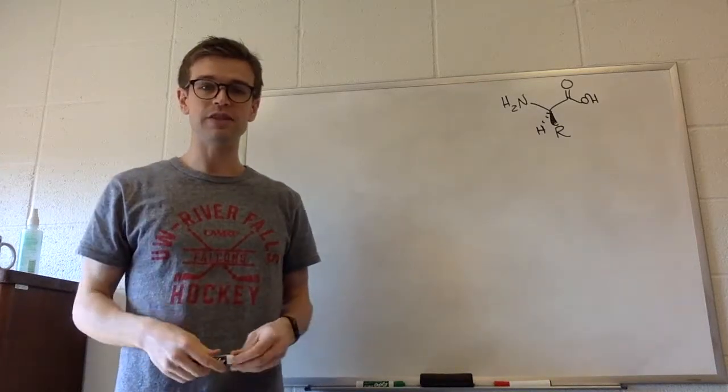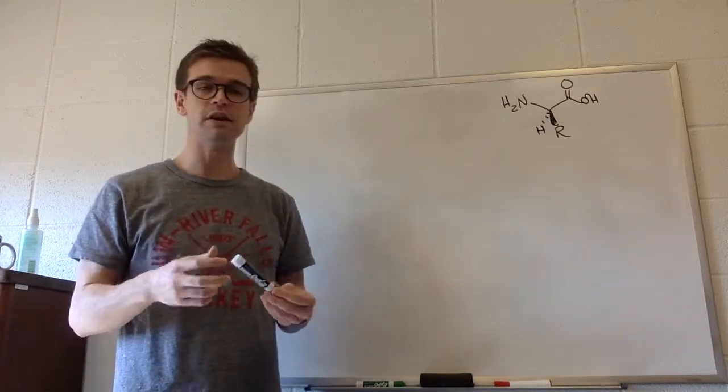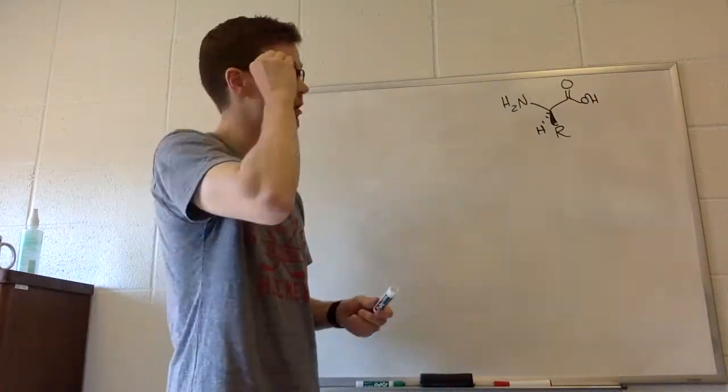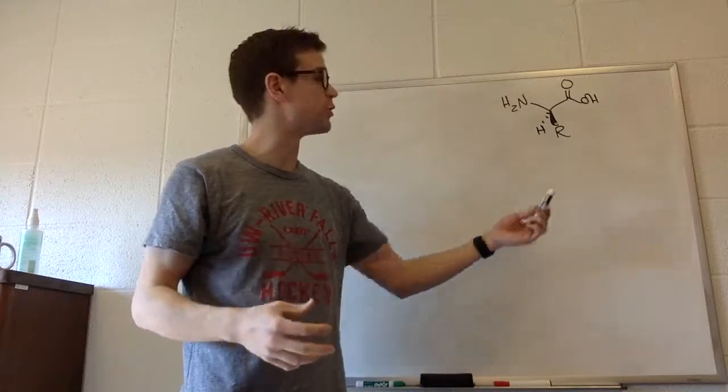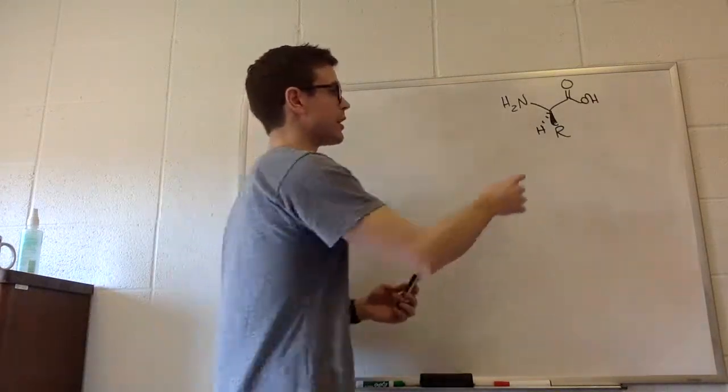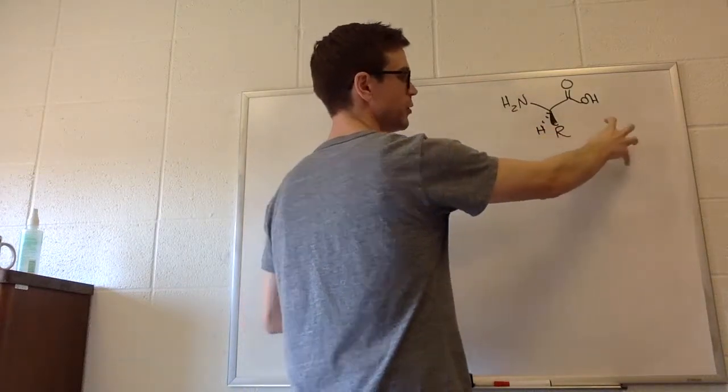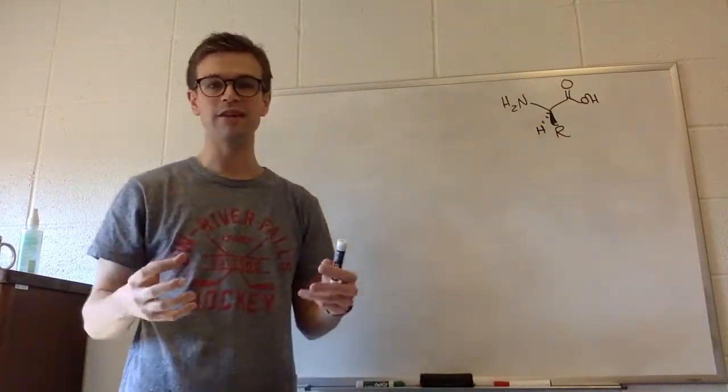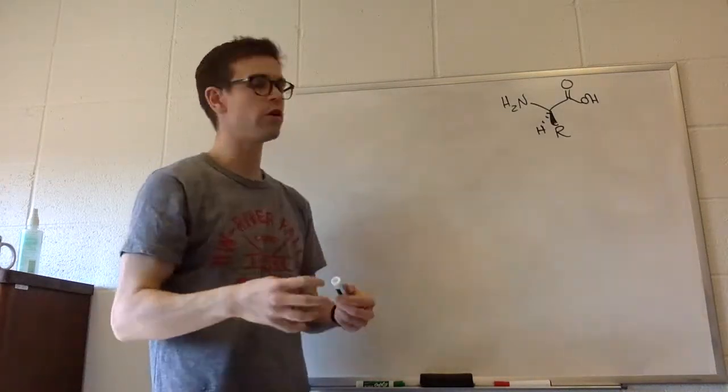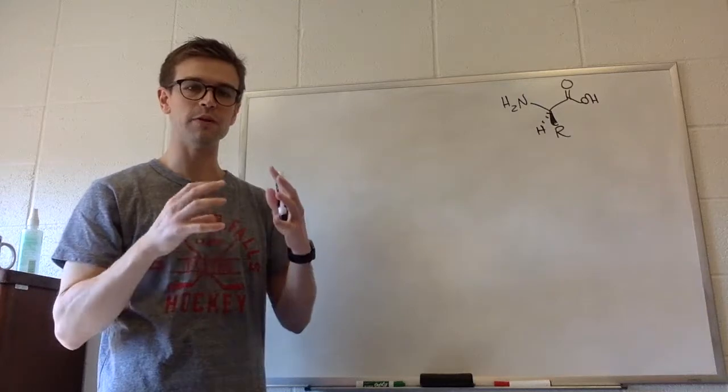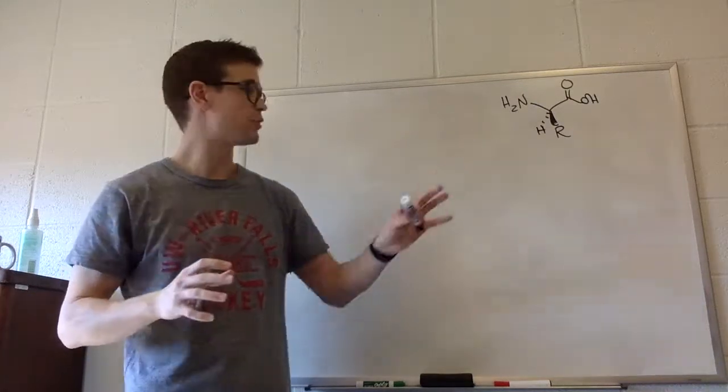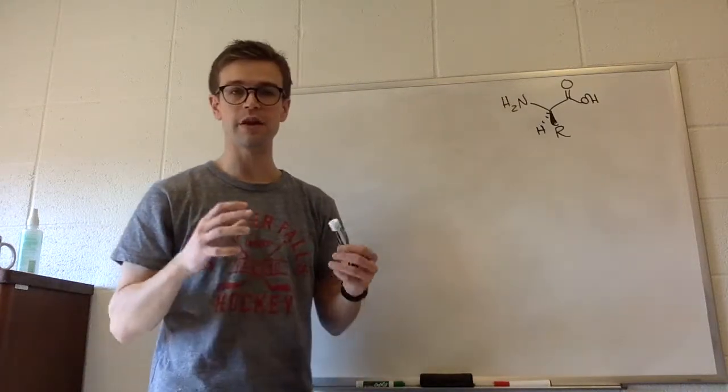The amino acids that generally make up the proteins in our body have different R groups here, and there are 20 different R groups that are possible. The simplest R group would just be a hydrogen. That would be called glycine. Then you have bigger R groups like a CH2 linked to a phenyl ring, called phenylalanine. When you put these different amino acids in different orders in proteins, that makes the proteins take different shapes and do different functions in the body. So that's what amino acids are and why they're important.